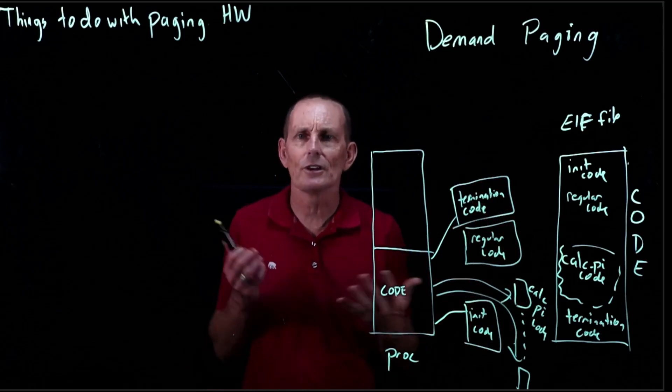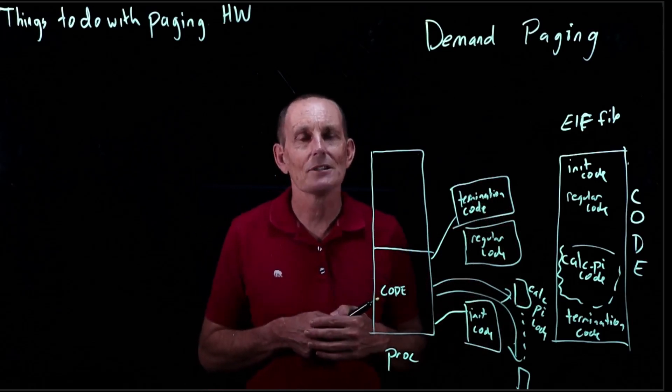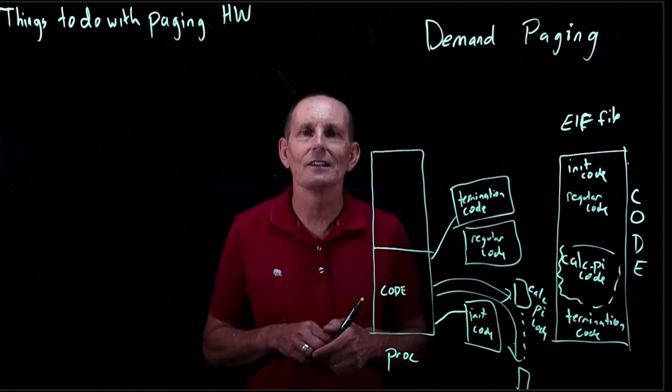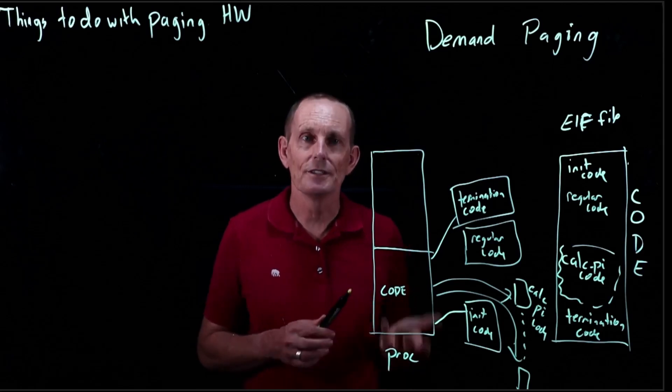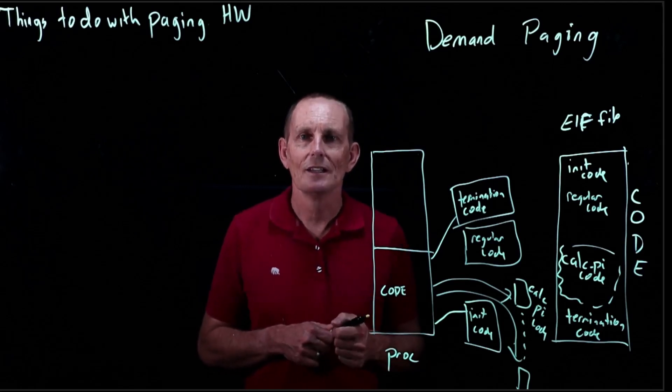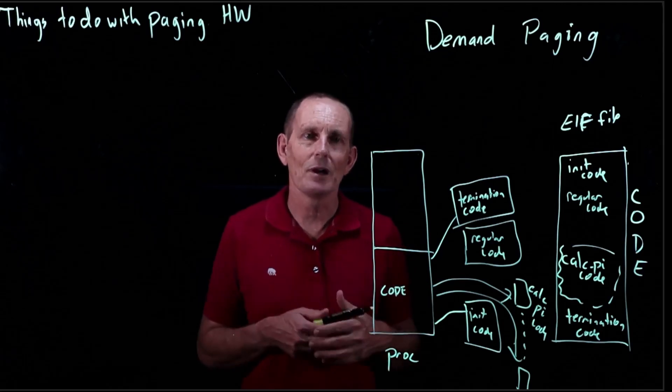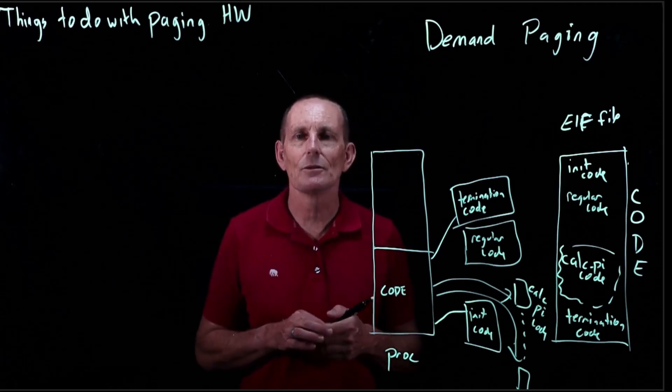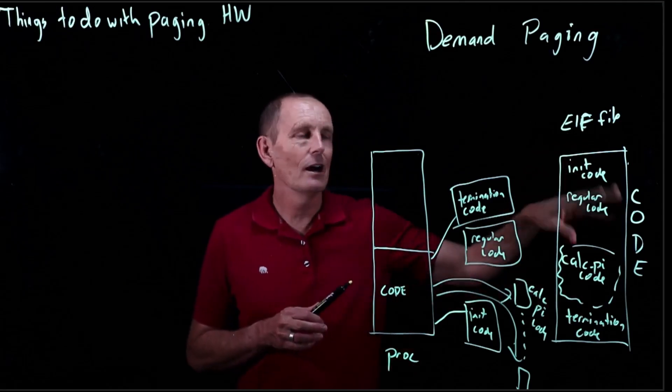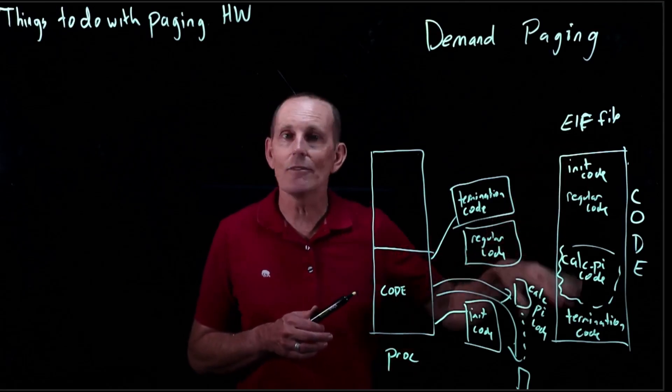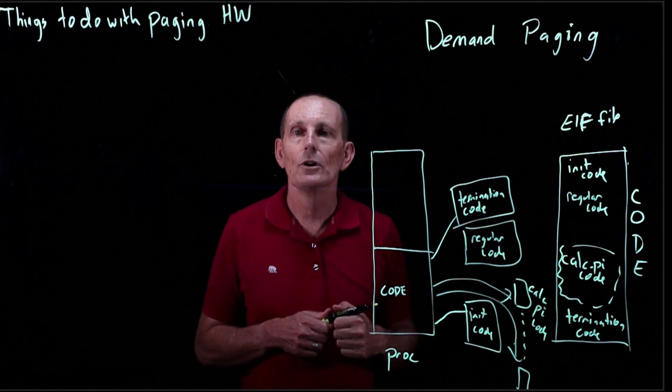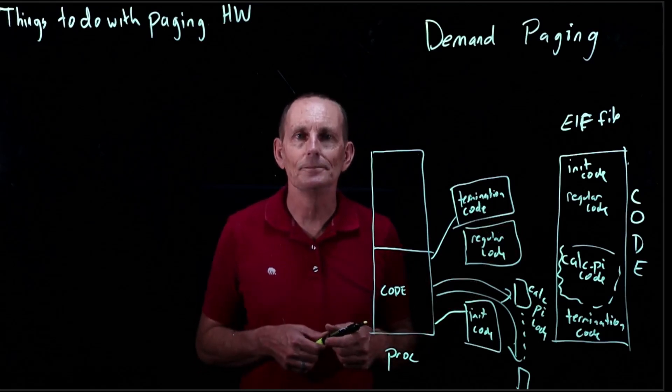There's a lot of this code that's just never used when we run this process, like all this calculating pi code. You can imagine for any big program there's lots of code that isn't used in particular runs of the process. If you think of Excel, it has so many different options. Some of them I probably only use 10 or 20 percent of Excel, so I'm sure there's a large fraction of the code that just is never executed for runs of Excel that I do.